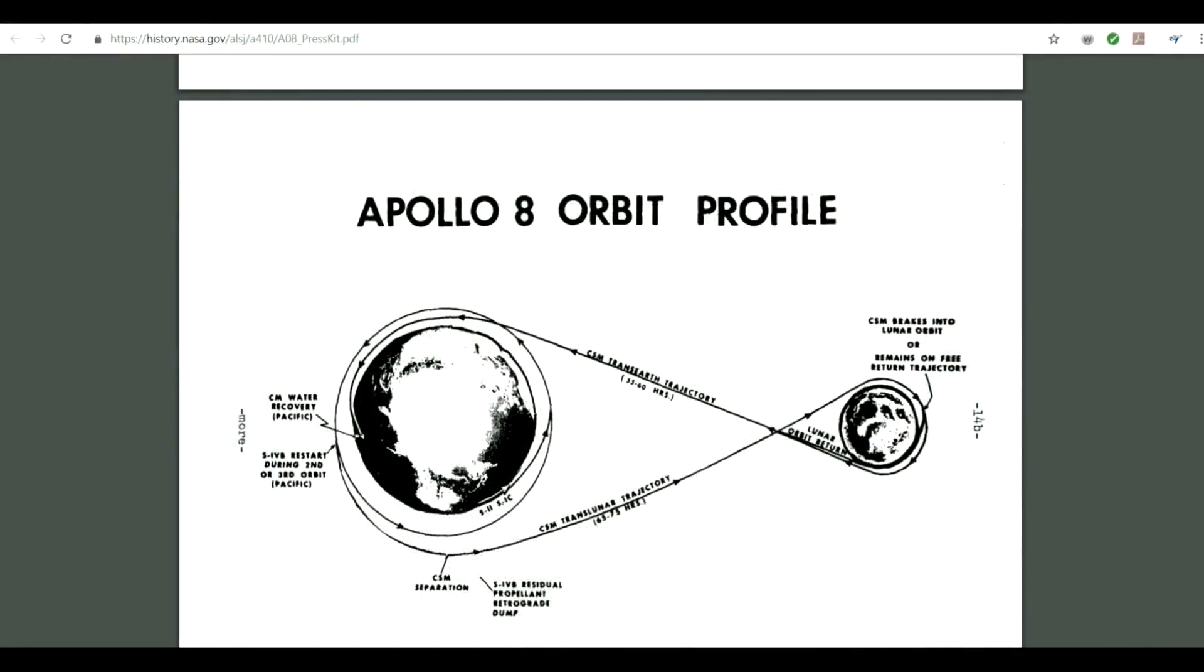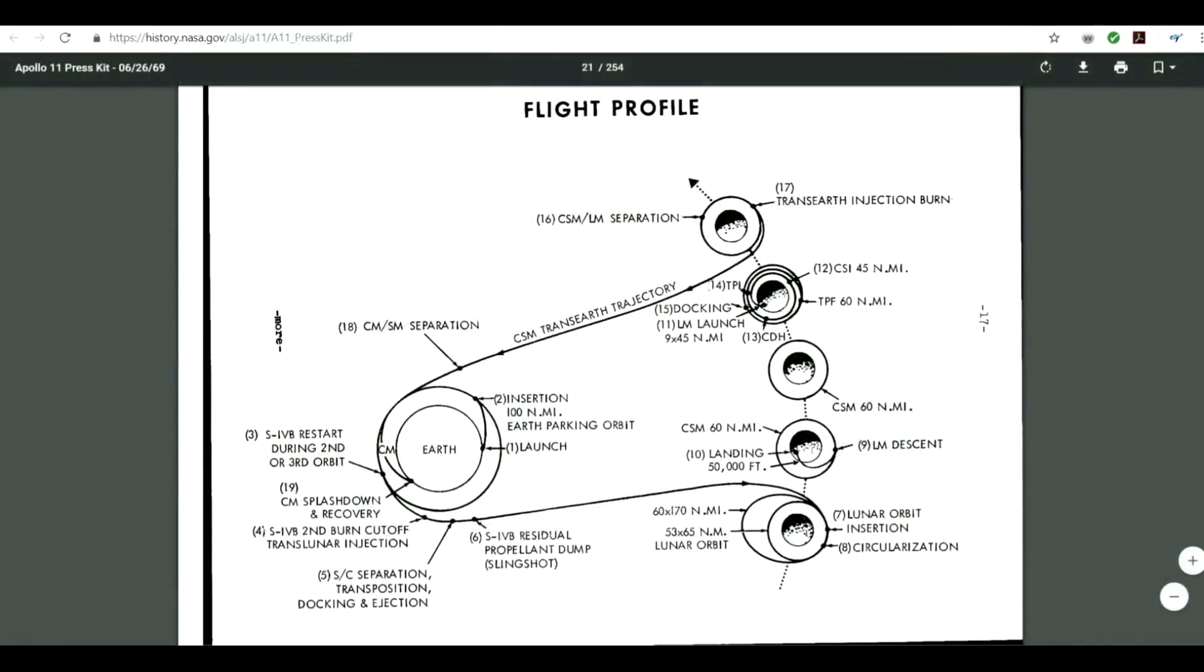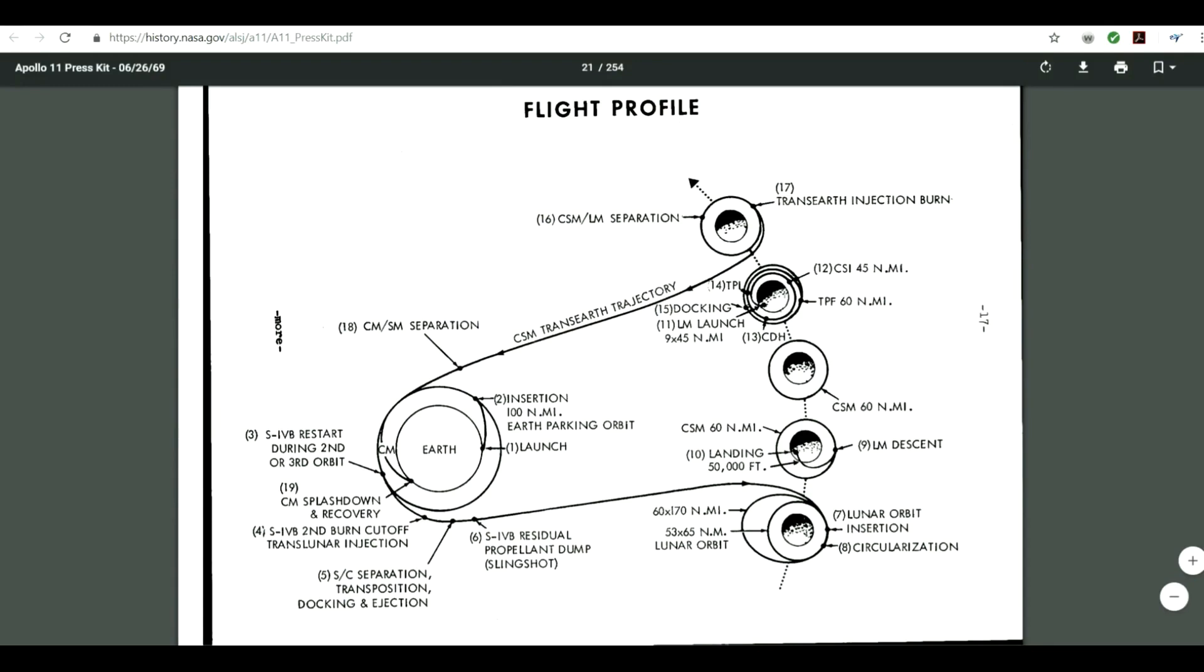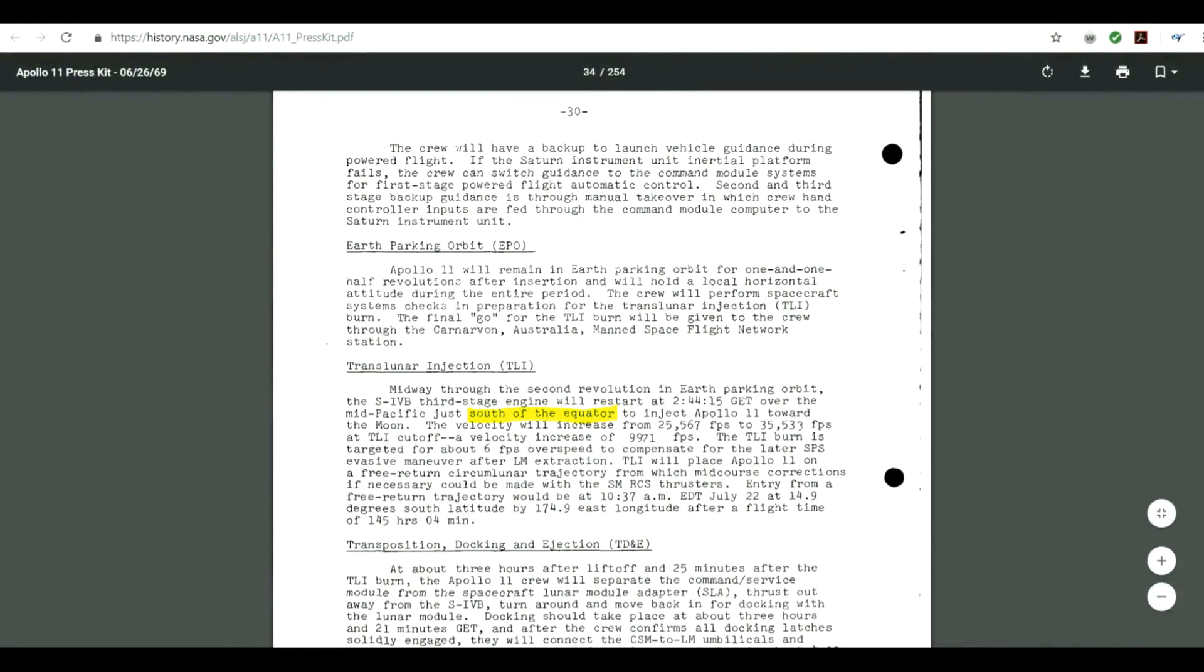Take this image from the Apollo 8 press kit, page 21. We are told that the various Apollo missions all traveled on basically the same course. The Apollo 11 press kit has a similar image on page 9, and then, when you dive in deeper, which you have to do, you find on page 34 where they describe the trajectory the spacecraft will take once it starts its trans-lunar injection from the Earth parking orbit is just south of the equator, in the South Pacific.